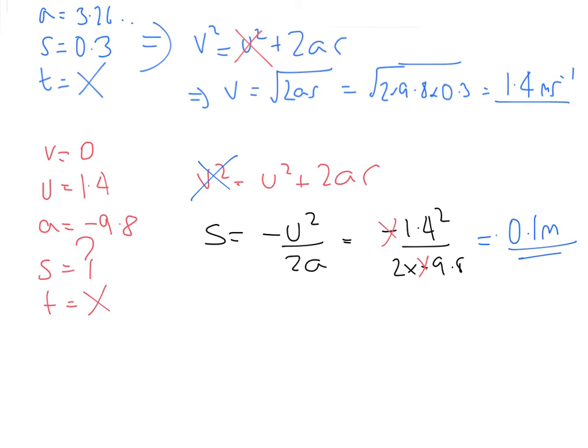The total height is going to be the starting height, which was 0.3, and the height while it was still being accelerated by the 4 kilogram mass, which was 0.3, and then plus this height there, which gives you 0.7 metres. So that was quite a tricky little problem using multiple SUVAT equations. But it's the kind of question you get asked when doing this kind of thing.